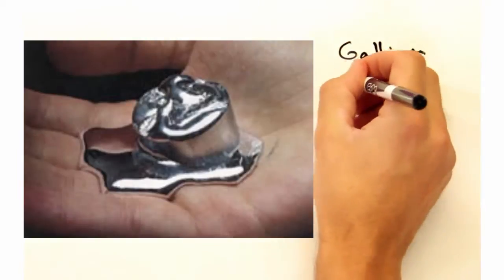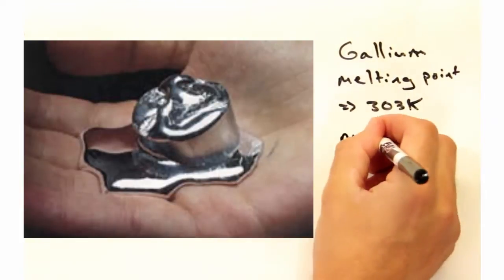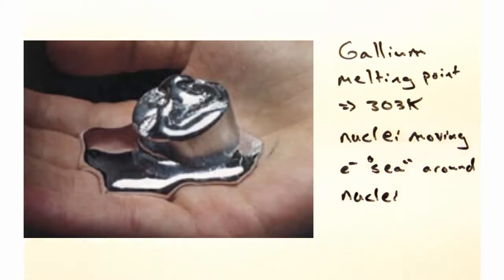Let's think about gallium. Hold it in your hand, turns into a liquid. Here, the positively charged nuclei are moving in all sorts of random directions, but the electrons still form the sea that moves between the nuclei.